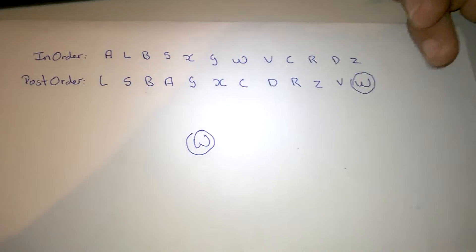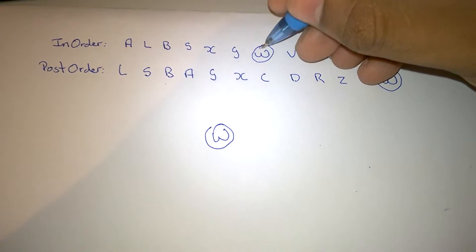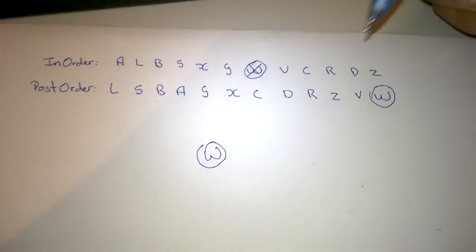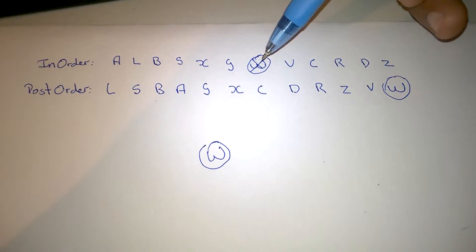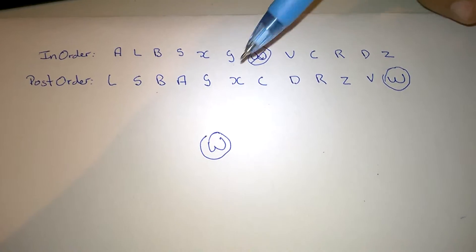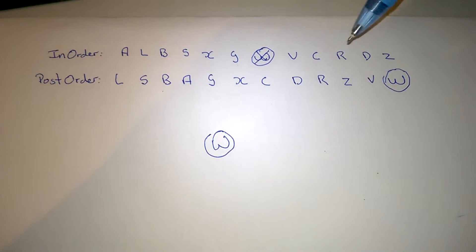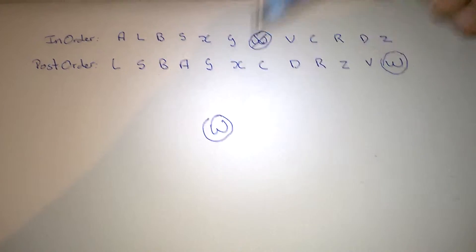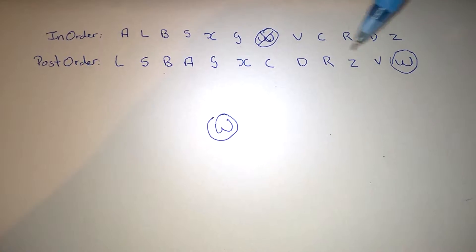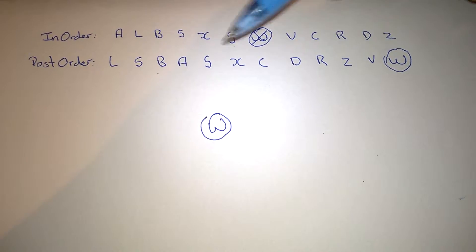So then we go to the in-order and we find where W is. We're going to remove it from here because we finished with it. What we need to note is that everything to the left of W goes on the left-hand side of the tree, and everything to the right of W will go to the right-hand side of the tree. This is a process you're going to keep repeating for each value found in the post-order section.